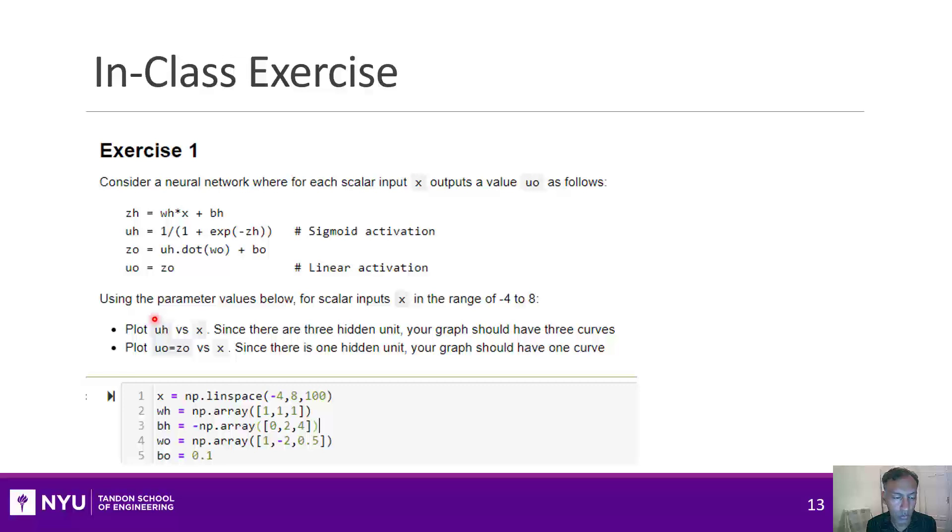That wraps up what I want to say for now to give you a little bit of an intro to neural networks. Before you go on, what I'd like you to do is try this very simple exercise. It is in the GitHub website, and I've given you some parameters for the hidden and output units for a scalar x, and I want you to plot the output and the hidden units as a function of x. Once you get done with this, we'll go on to the next section where we'll start to talk about how to train neural networks.